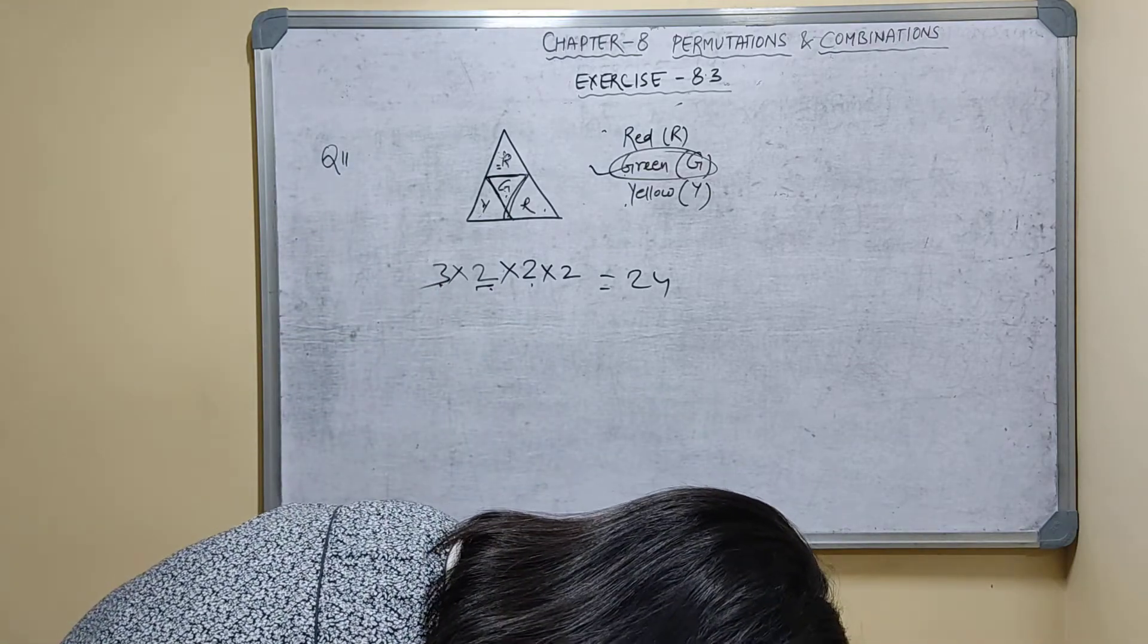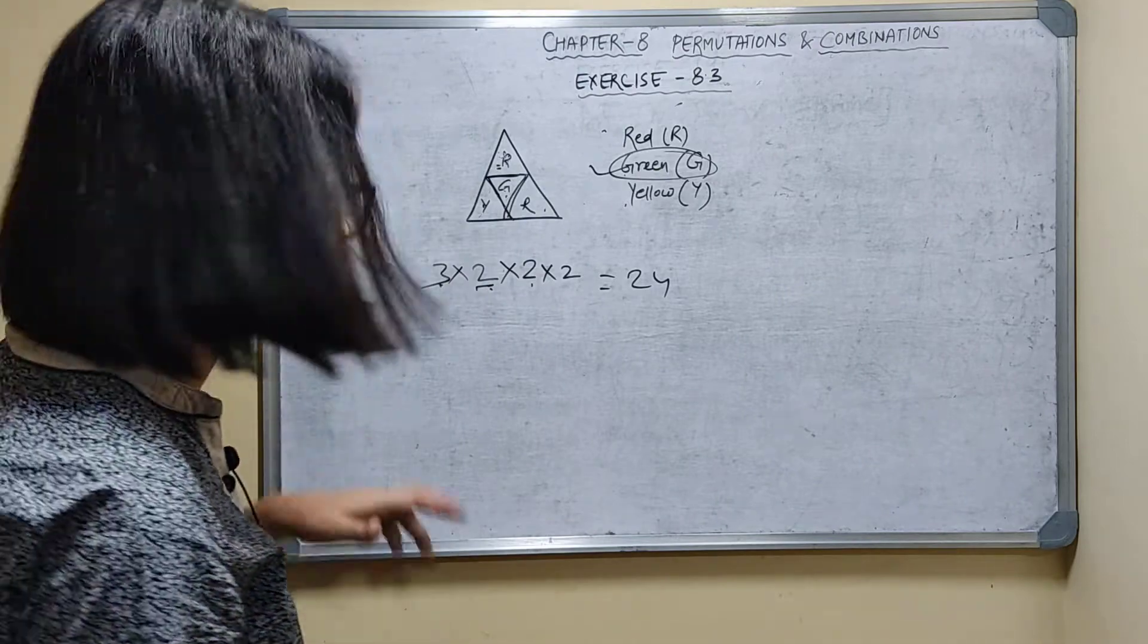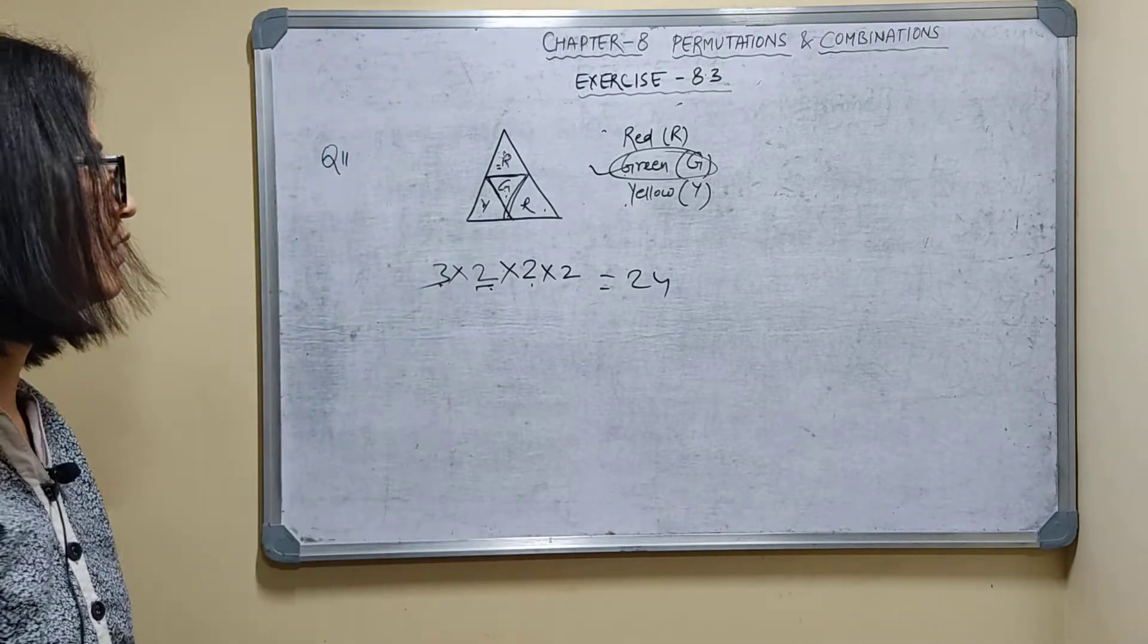24 ways this can be done if no 2 adjacent triangles have the same color. So 24 ways. Thank you.